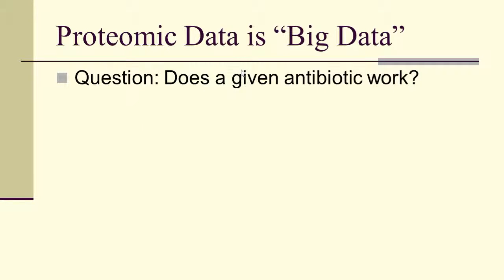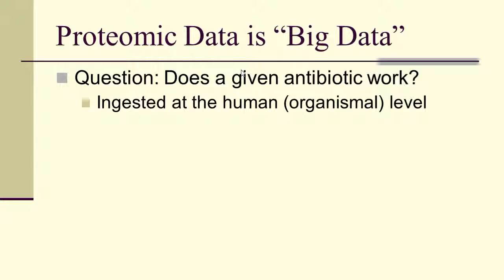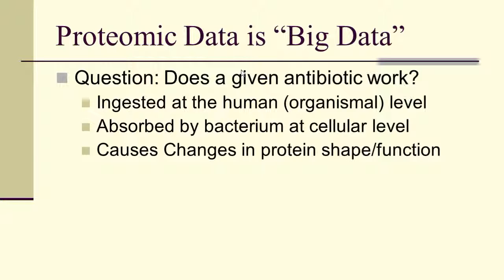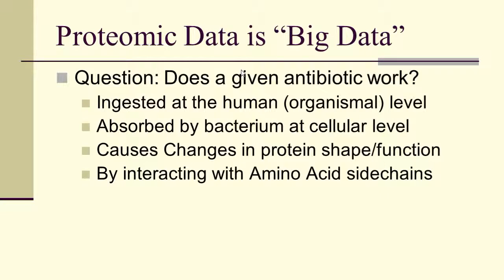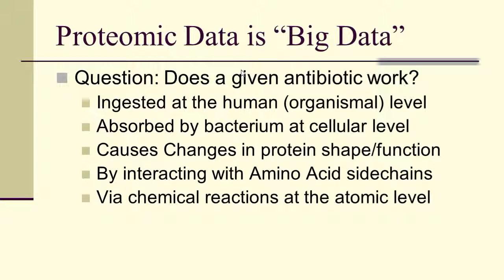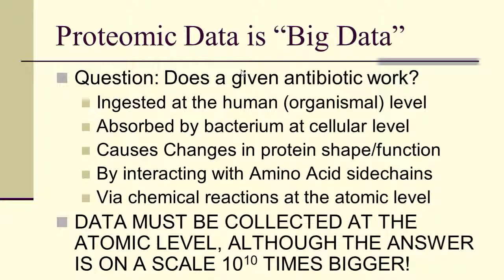So proteomic data is big data. So for instance, if you had an antibiotic, how would it work? Would it be just at a human level, absorbed by bacterium at a cellular level, cause changes in a protein shape or function by interacting with amino acid side chains via chemical reactions at the atomic level? And if you're going to study that process, where do you have to collect the data? At the atomic level. Even though the answer is on a scale 10 to the 10th times bigger than where the data has to be collected.